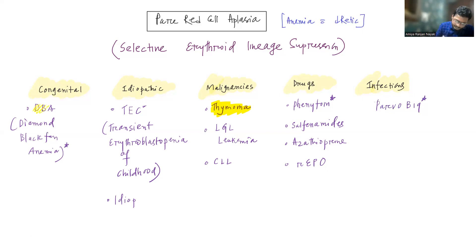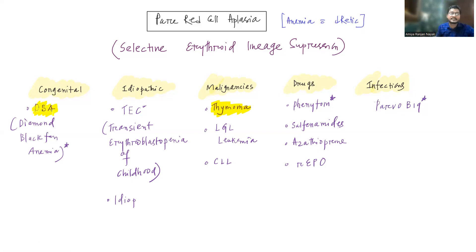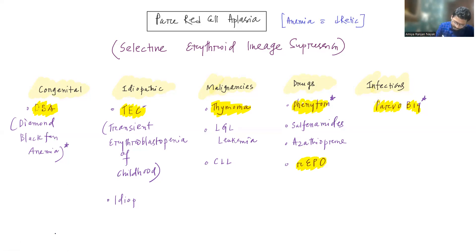To summarize the causes: among congenital diseases, Diamond-Blackfan anemia is key. Among idiopathic conditions, transient erythroblastopenia of childhood is important. Among malignancies, thymoma is the most important, but large granular lymphocytic leukemia and CLL can also cause PRCA. Among drugs, phenytoin, sulfonamides, azathioprine, and recombinant EPO are important. Among infections, Parvovirus B19 is the key one. We will now discuss Diamond-Blackfan anemia, TEC, and Parvovirus B19 in more detail; malignancies will be discussed separately.